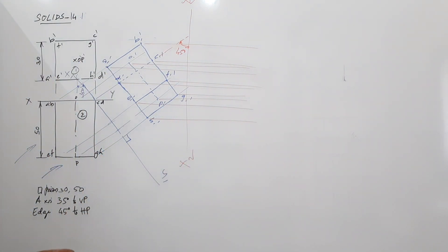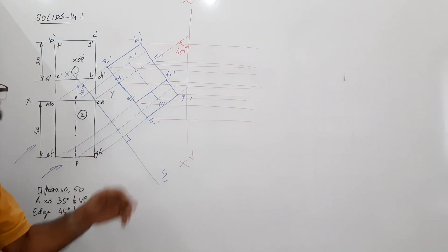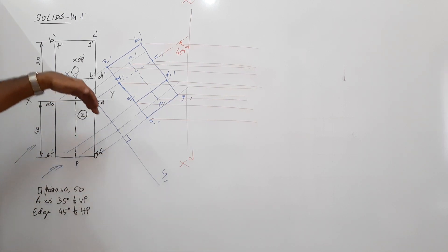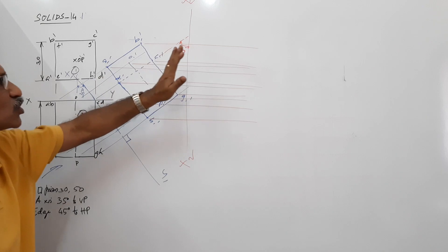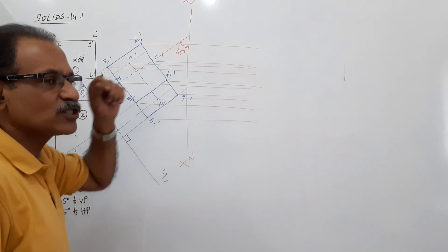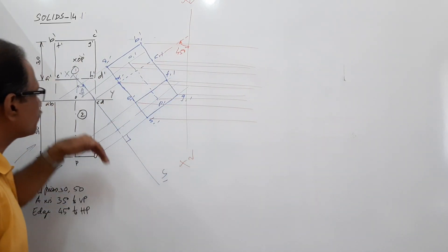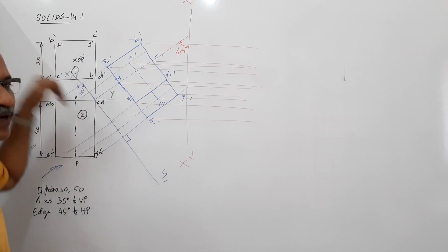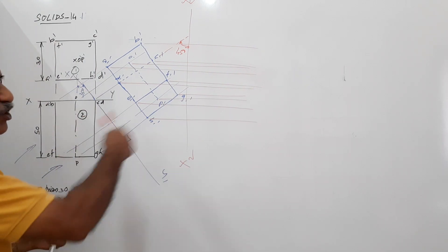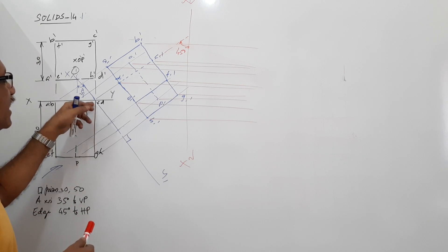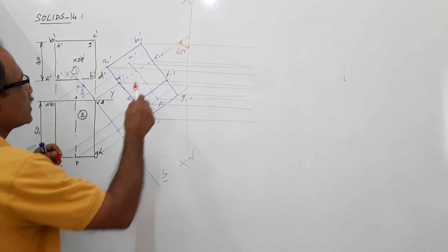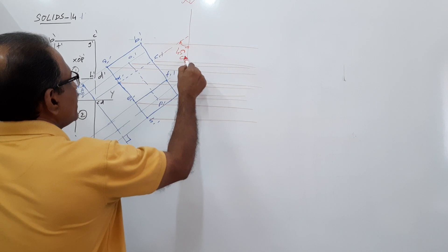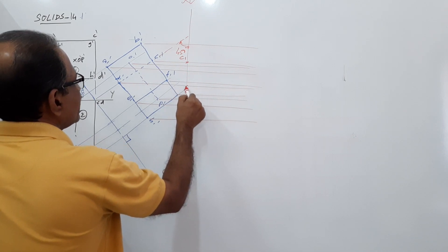There must be 9 projectors, and there must be 10 — that is 4 plus 4 plus 2. Now you have to take the distance of the previous plan from X1Y1. You are going to draw a new plan, so take the distance of the previous plan from the previous XY, which is X1Y1, and set off those distances. C and D have zero distance, so on the projector through C1 dash you will get C1 and D1.